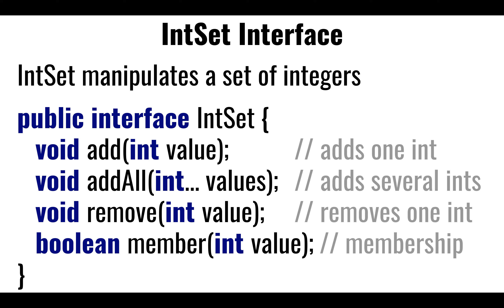The other two methods — remove and member — just remove an integer and ask whether a particular integer is in the set. We're not going to change their implementation. It would be great to just blindly inherit them from the base implementation. Whereas for add and addAll, depending on the implementation, perhaps I want different versions. So we'll point out these implementation decisions as we go along.